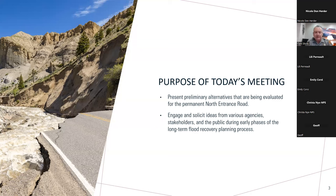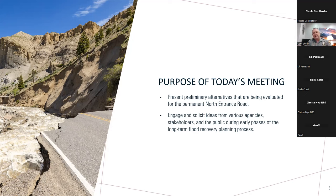Whether you're in Bozeman or New York, you're calling in because you care about what's going on here with this particular project. Most of you know we went through a very major flood event on June 13th of 2022. A team from the National Park Service and the Federal Highway Administration have all worked together from really the day the flood happened, getting these roads reconnected and repairs done very quickly in the summer of 2022.